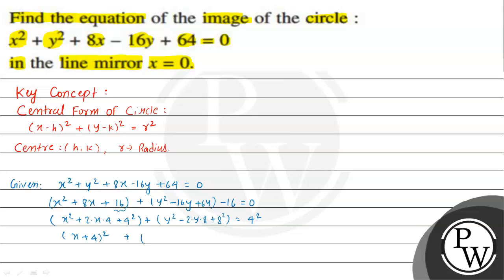So we get (x + 4)² + (y - 8)² = 4². Comparing with the central form, h = -4 and k = 8, and the radius r = 4.